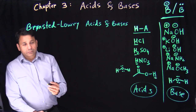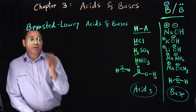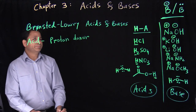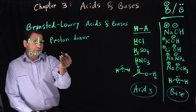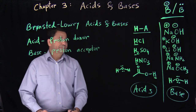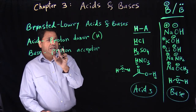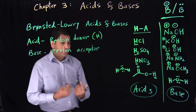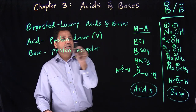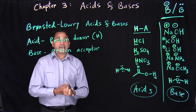So what are the Brønsted-Lowry acids and bases? By definition, an acid is a proton donor, and a base is a proton acceptor. A proton is a hydrogen. So if an acid is a proton donor, that means it should have a proton — that's why anything which has a hydrogen is an acid. And a base is a proton acceptor, so the base will go and accept a proton.